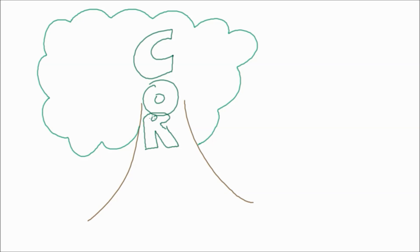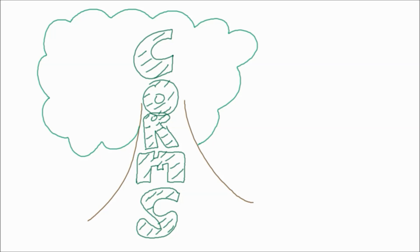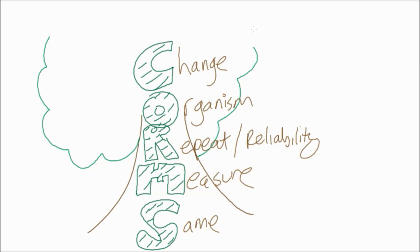So we can look at the CORMS tree. C is for things that you're going to change, O is for organism, R is for repeats and how you're going to be reliable, M is for measure, and S is for same. So it's a way of remembering what sort of bits you need to include in any practical planning.